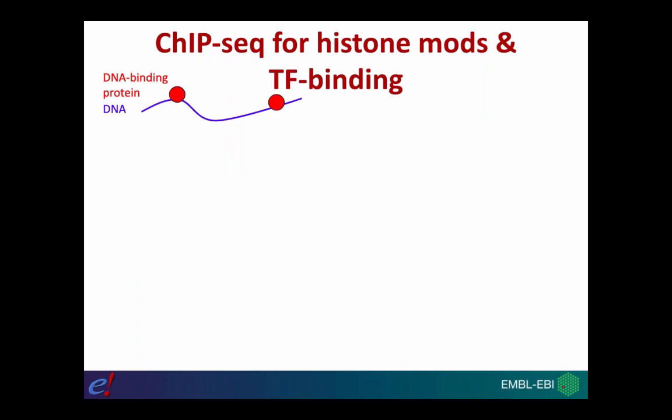There is an experimental technique called ChIP-seq for analysing the pattern of histone modification and transcription factor binding across the genome. Firstly, we take our sample, which includes DNA with a number of different proteins bound to it — these proteins might be transcription factors or histones.